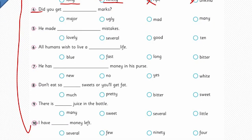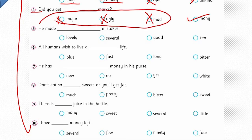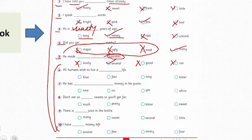The fourth one: 'Did you get ___ marks?' Major, ugly, and mad are quality adjectives. 'Many marks' — yes, many is the right option because the other three are qualities; only 'many' is a quantity. The fifth one: 'He made ___ mistakes.' 'Lovely' is a quality; 10 specifies the exact number, but since mistakes are spoken of generally rather than from a specific test, 'several' is the correct option — it expresses general quantity.